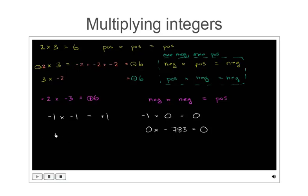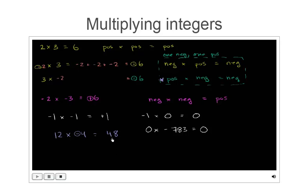What about 12 times negative 4? Positive 12 times positive 4 would be 48. Since exactly one of the two numbers is negative, the product is negative. So the answer is negative 48 — you can imagine repeatedly adding negative 4 twelve times.